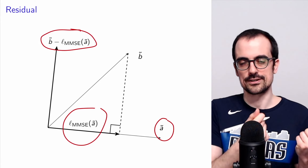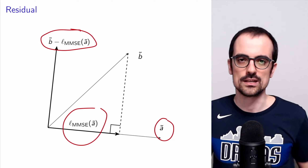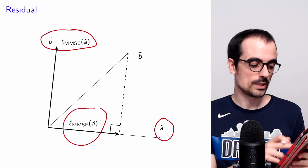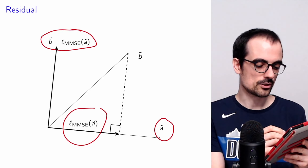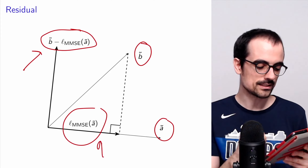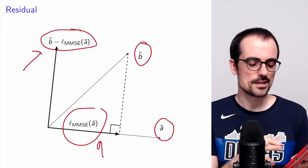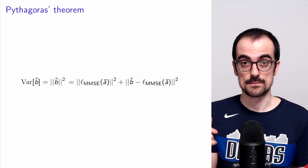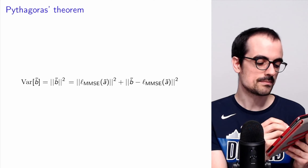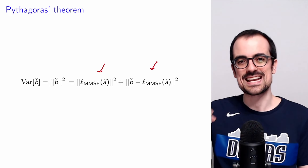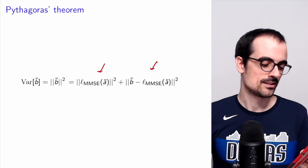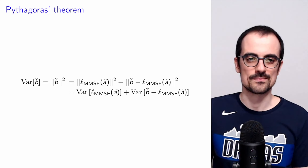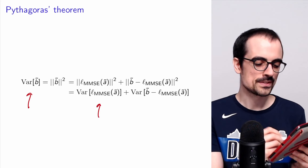Because of this orthogonality, we can apply Pythagoras' theorem to vector B, which is decomposed into two orthogonal vectors. By Pythagoras' theorem, the squared length of B equals the sum of squared lengths of the linear estimate and the residual. In our analogy between random variables and vectors, squared lengths are just variances. So we get the decomposition of variance almost for free, just from Pythagoras' theorem: the variance of B equals the variance of the linear estimate plus the variance of the residual.